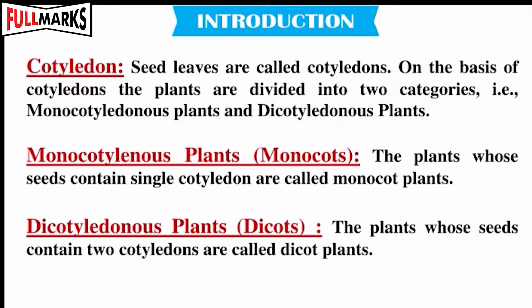Seed leaves are called cotyledons. On the basis of cotyledons, the plants are divided into two categories: monocot plant and dicot plant.